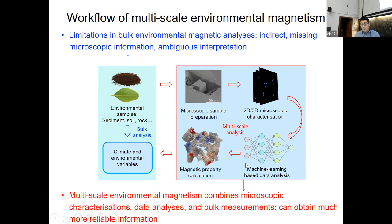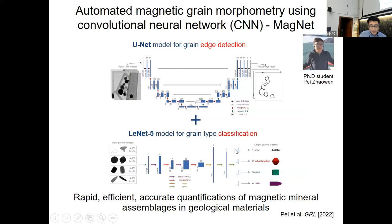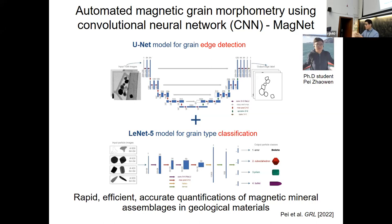For this project, the main part is about data analysis — once we have very large datasets, what do we do? And once we have the microscopic data, we can build numerical models. We use micromagnetic models to predict bulk environmental magnetic properties. One of the works we did — my PhD student, who's actually sitting here — we developed CNN, a convolutional neural network, to characterize magnetic mineral morphology. Morphology is very important: it controls the magnetic properties.